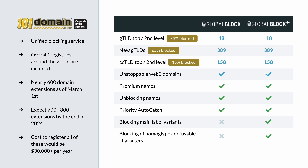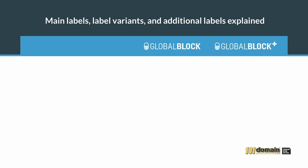It's important to know that if you are a current owner of a DPML Plus, you are also given blocking of exact matches for your additional labels at no additional cost, which is a huge consideration. It's helpful to understand how labels work in the GlobalBlock service. We go into more detail on this in Part 2, but here's another brief overview. Using Bank of America as an example, your main label would be BankofAmerica, without any spaces.